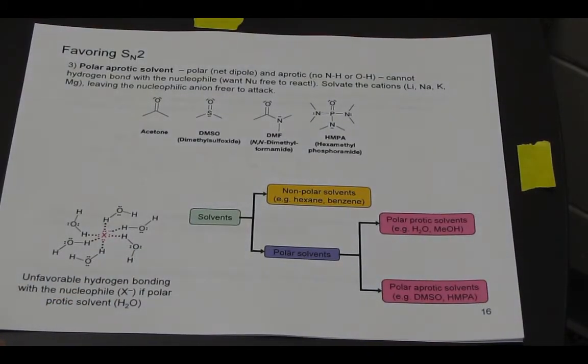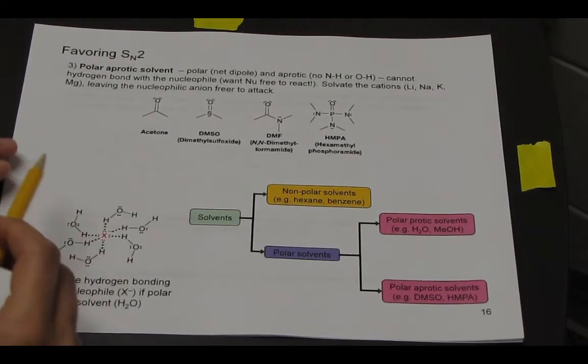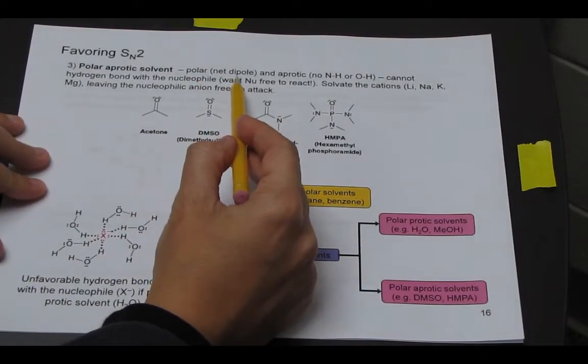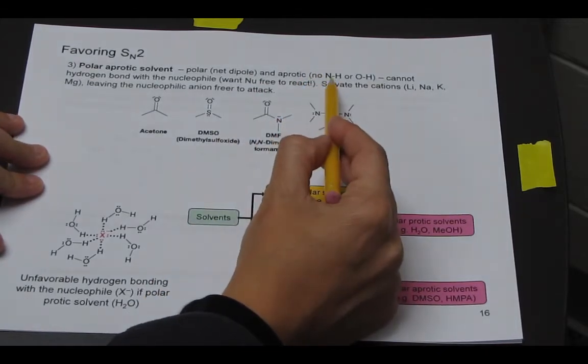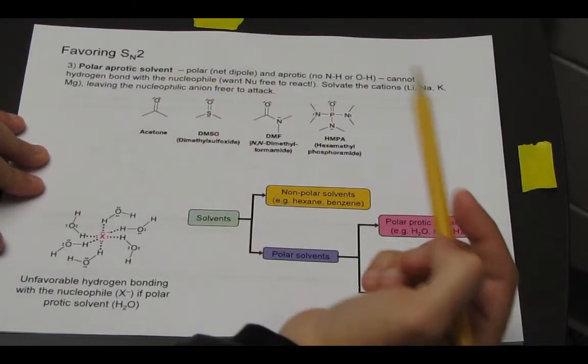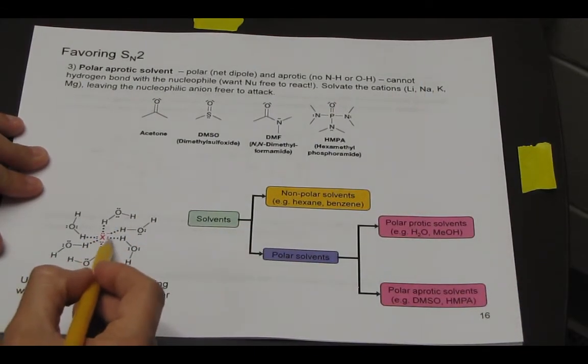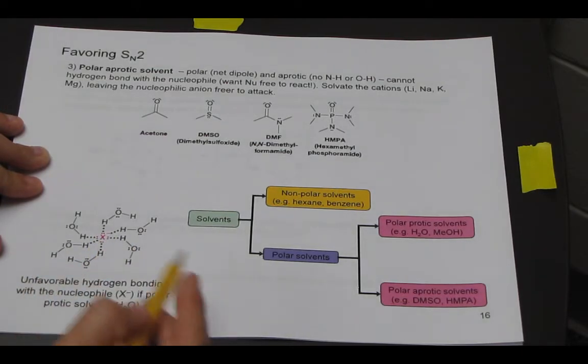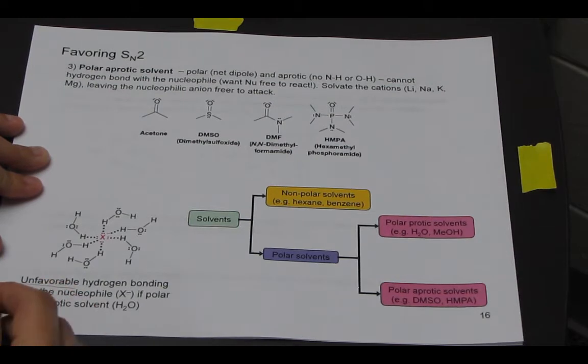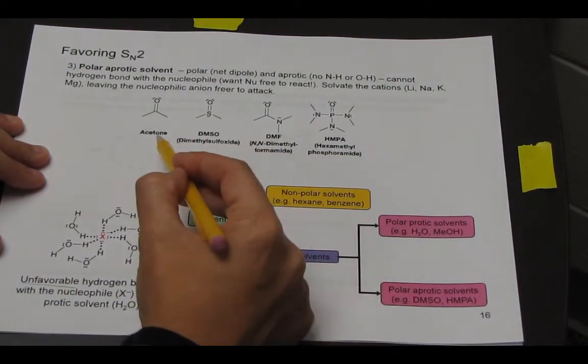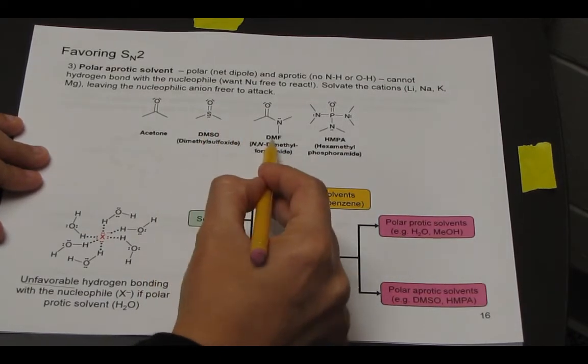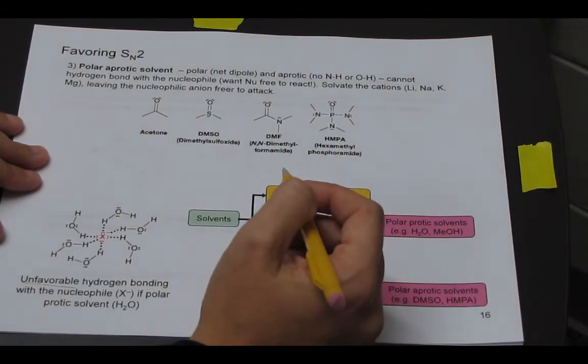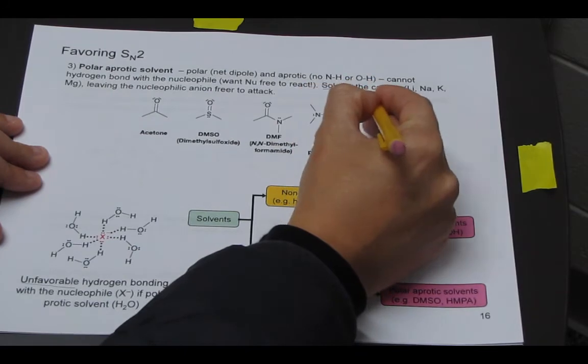And the last characteristic is the solvent, which is polar aprotic is favored. And so we had talked before about polar means that you have a net dipole. And aprotic means that you do not have an NH or an OH. And so you cannot have hydrogen bonding. And so if we picture our nucleophile down here as X minus, we don't want water because water can hydrogen bond to our nucleophile. And this is unfavorable. So we want usually one of four solvents. Acetone, DMSO, DMF, or HMPA. These are all good solvents for SN2.